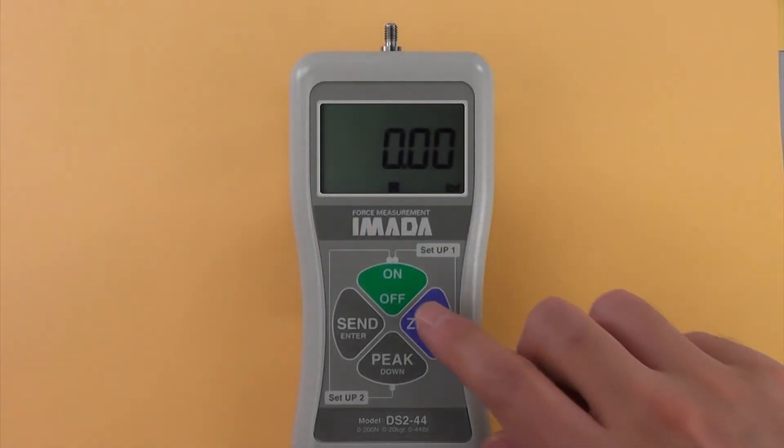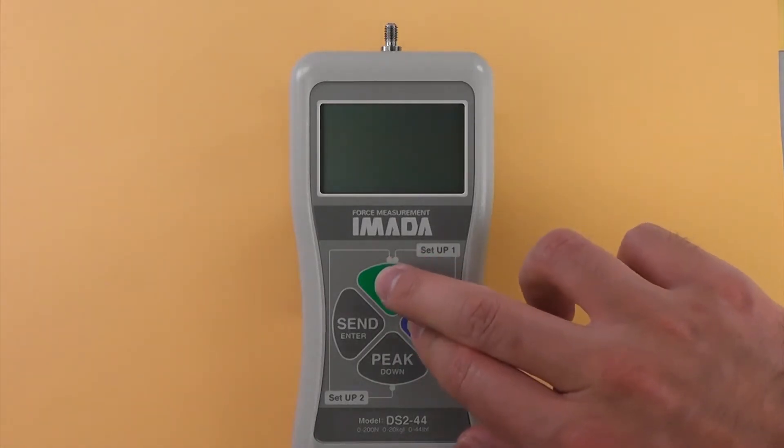Selecting units: Turn off the gauge. Hold 0 and press ON once.